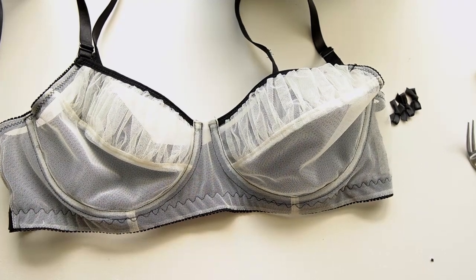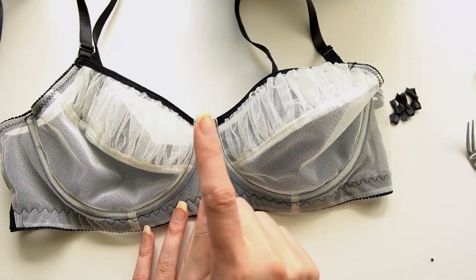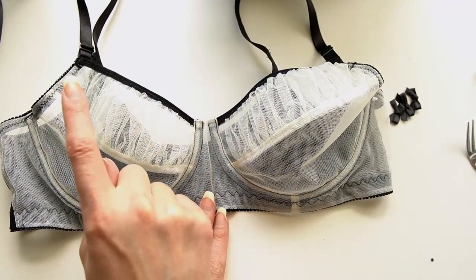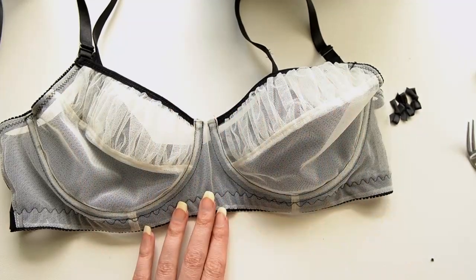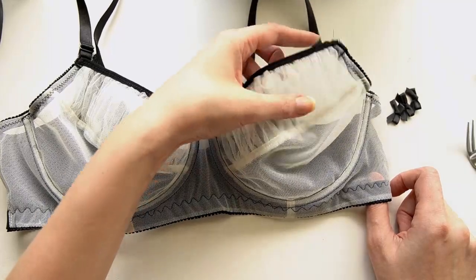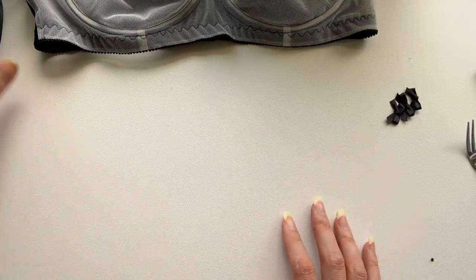Hi everyone and welcome back to Liz Sews. I recently finished off this bra and I think the thing that it really needs now is some cute little ribbons. I'm thinking one in the center front and maybe a couple over here by the straps. Now you can certainly purchase bows and lingerie ribbons from most bra making suppliers, but it's really easy to make your own as well.